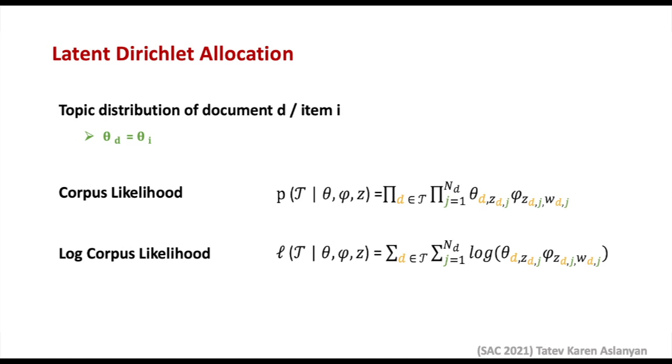So, if we look at a single item, then theta_D stands for k-dimensional topic distribution of document D, which is the same as item I. Thus, theta_I shows the extent to which each topic is discussed in all the reviews for item I.